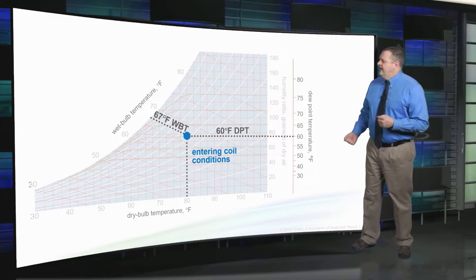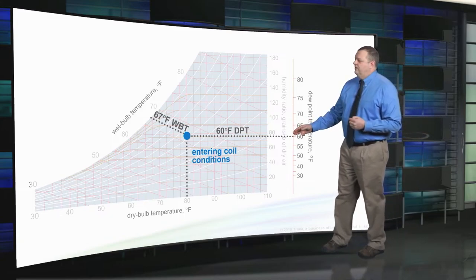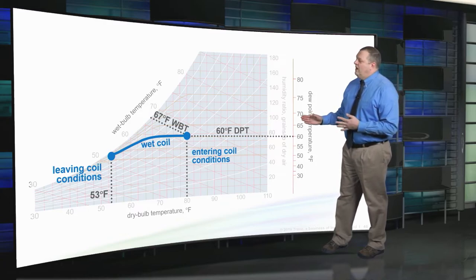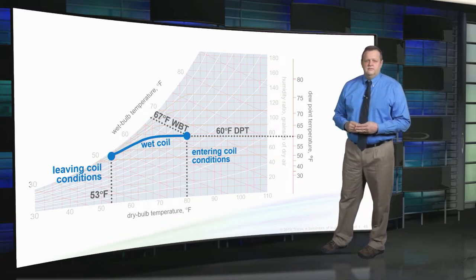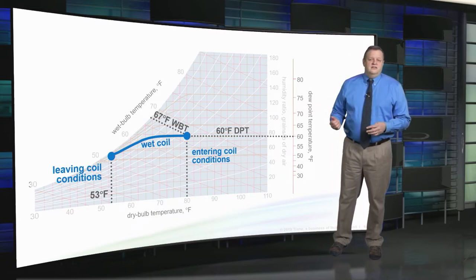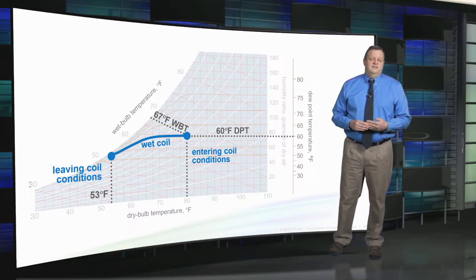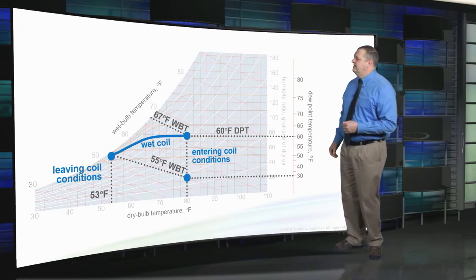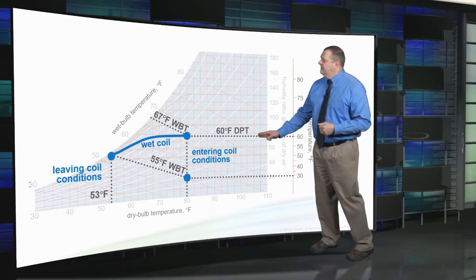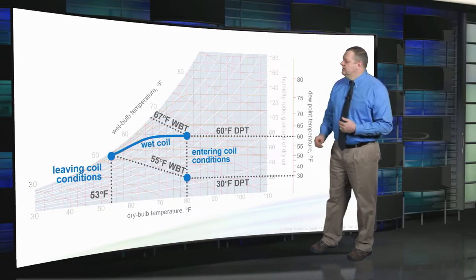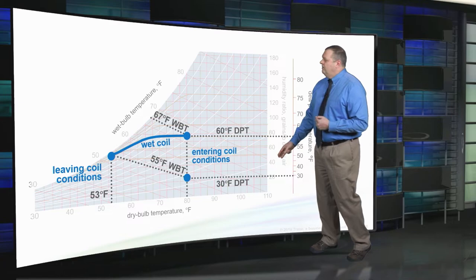Coils with higher air pressure drops are in general more difficult to clean properly. Standard 62.1 requires that the air pressure drop of a fin tube coil cannot exceed 0.75 inches of water — but at a specific air velocity, and the limit is based on the pressure drop when the coil is dry, not when it's dehumidifying. Going back to our example: the entering air conditions are 80 degrees dry bulb and 67 wet bulb, equating to a 60 degree dew point. The air is being cooled to 53 degrees, so water vapor will be condensing onto the coil surface. All the air pressure drops shown so far are for a wet coil.